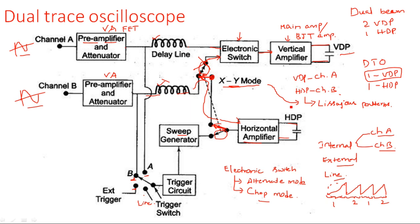To summarize the dual trace oscilloscope: only one set of vertical deflection plates and one set of horizontal deflection plates are used. The single set of vertical deflection plates displays both signals using an electronic switch, which operates in two modes — alternate mode and chop mode. In alternate mode, Channel A is selected during the first sweep and Channel B during the second sweep, alternating. In chop mode, signal samples are rapidly selected and transmitted to the vertical deflection plates. In XY mode, both plates are operated with sinusoidal signals and Lissajous patterns are generated on the display.